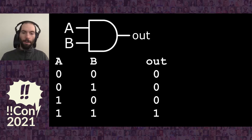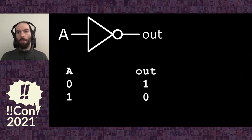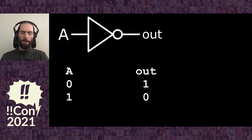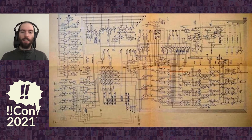There are lots of other logic gates, but maybe one that's interesting to consider is also the NOT gate. It goes from an input of zero to an output of one, and an input of one to an output of zero — so it just inverts the input. AND gates and NOT gates can do everything.